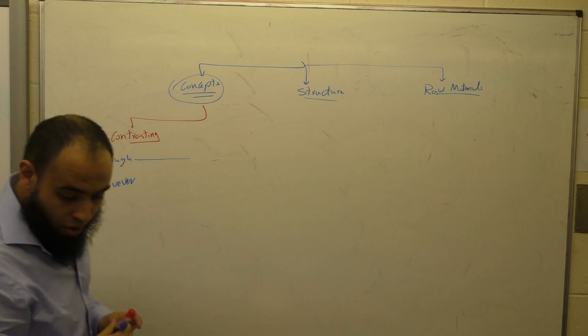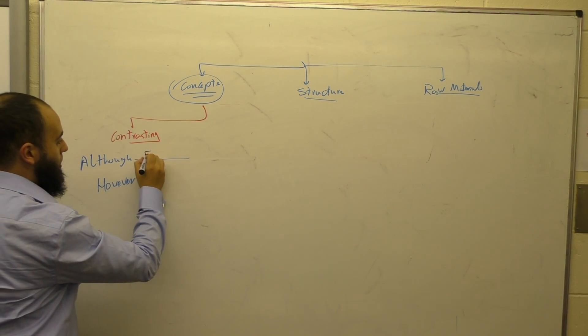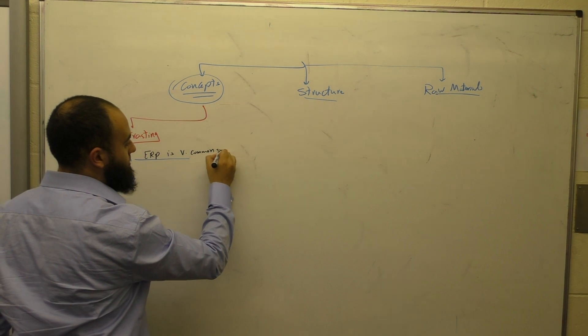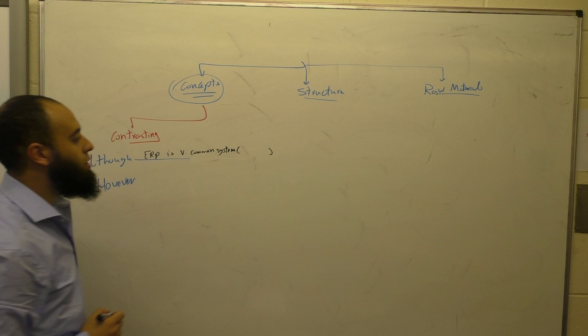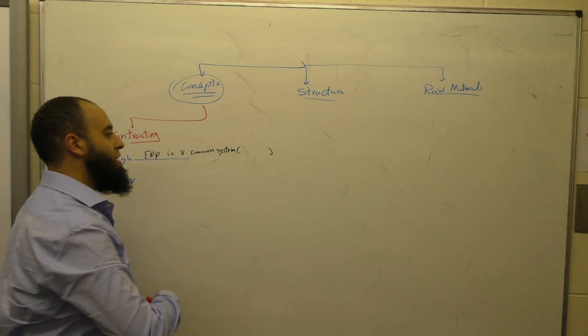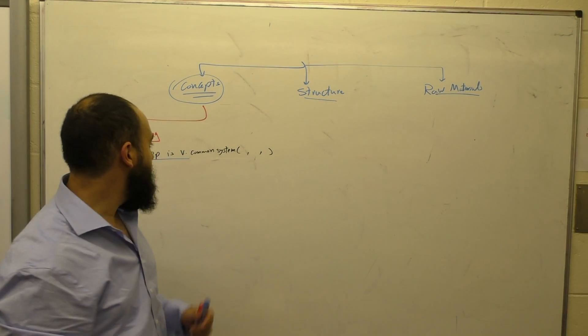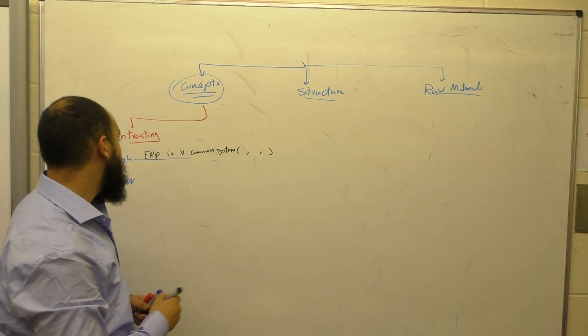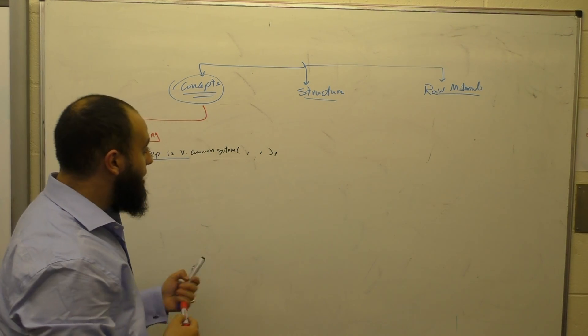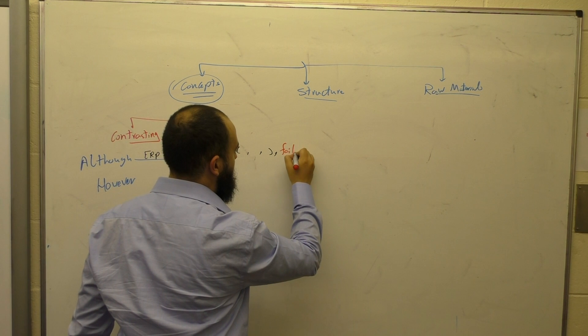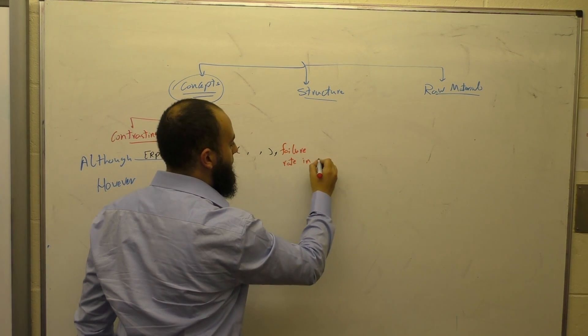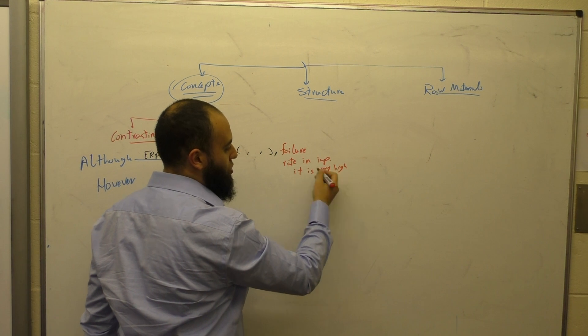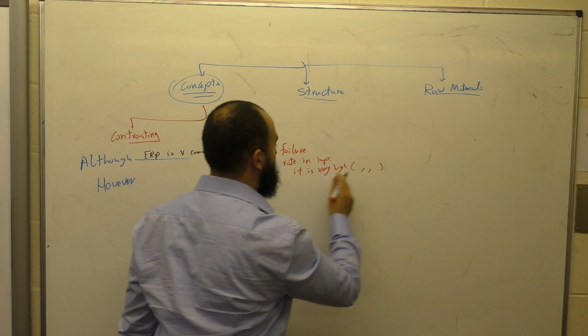Look, for example: Although ERP is a very common system—and I have to say who said that—I can give three or four studies that talk about that ERP is an information system that becomes very common among organizations in the UK. Although that, the failure rate is very high. The failure rate in implementing it is very high. Of course, in the UK people don't love to use the word 'concept,' but we can now just give you an example and say who said that.